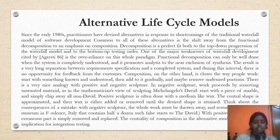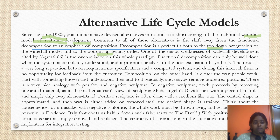In this slide, we will be discussing about alternative life cycle models. Since the early 90s, practitioners have devised alternatives in response to shortcomings of the traditional waterfall model in software development. Common to all of these alternatives is the shift away from functional decomposition to an emphasis on composition. Decomposition is a perfect fit both to top-down progression and the waterfall model and to the bottom-up testing order. One of the major weaknesses of waterfall development cited is the over-reliance on this paradigm. Functional decomposition can only be well done when the system is completely understood, and it promotes analysis to the near exclusion of synthesis. The result is a very long separation between requirement specification and a completed system.